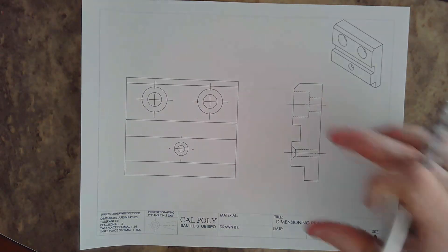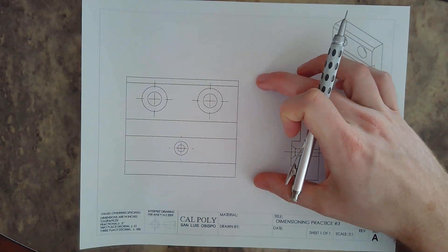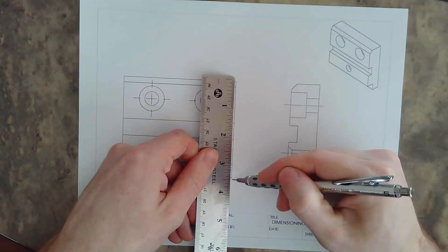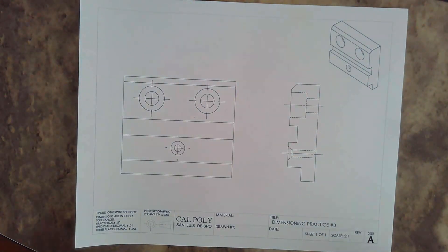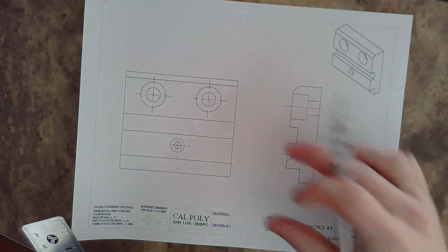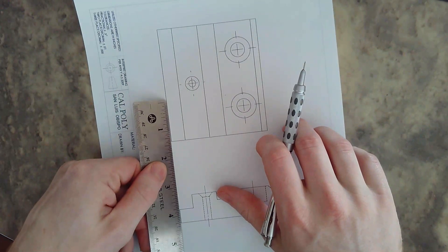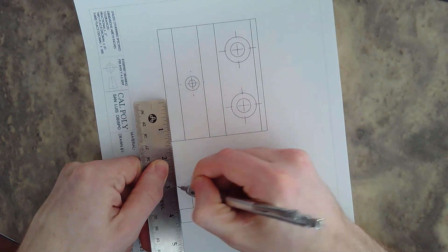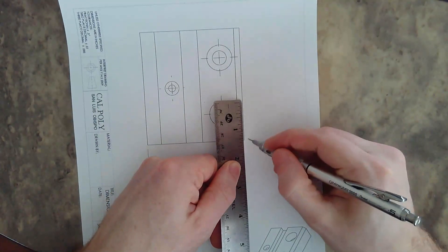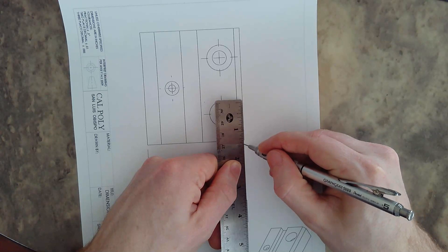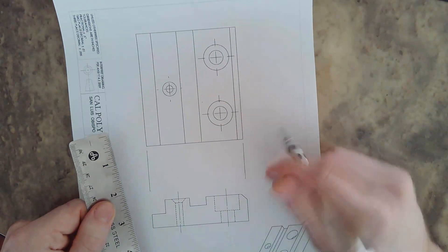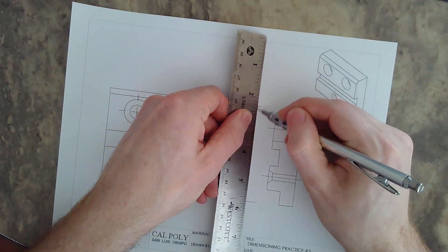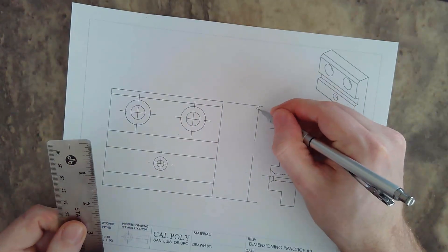I'm going to start with a 1.75 inch measurement for the height. You'll notice the scale is 2 to 1, so if I were to measure it, it should measure three and a half inches, which is double that 1.75. I'm going to place the height right here, pull it off quite a bit. I'm going to use an extension line off of the bottom. Remember, extension lines do not touch the physical part. Pull it off to 3/8 off of the top and the bottom here. Those are my arrowheads.